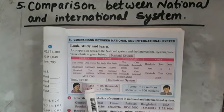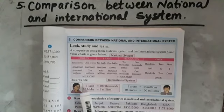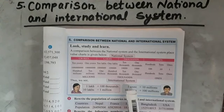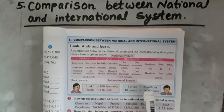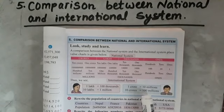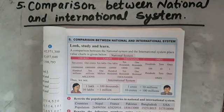One lakh in the national system is termed as hundred thousand in international system. Ten lakh in national is equal to 1 million in international. In the same way, 1 crore in national is equal to 10 million in international, and similarly 10 crores in national is equal to 100 millions in international. In this way we compare national and international system.